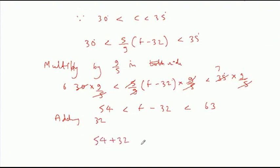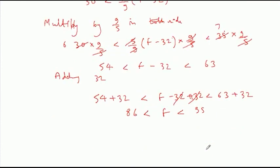54 + 32 < F < 63 + 32, which gives us 86 < F < 95.